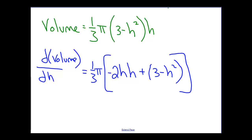This is the relationship that defines the volume rate of change as we change the height of the cone. In order to find our maximum value, we're going to set that equal to 0. So we have 0 equals one third pi times, if we simplify things, minus 2H squared plus 3 minus H squared.